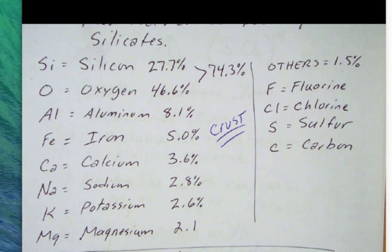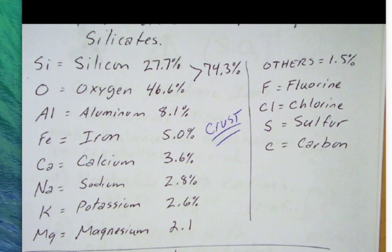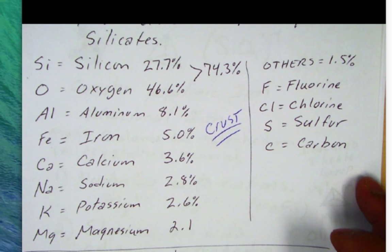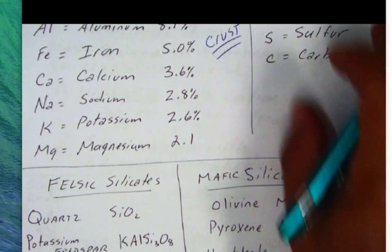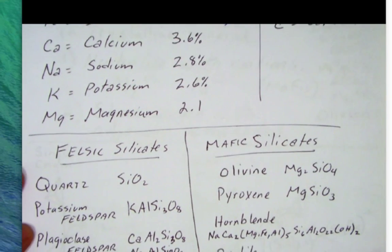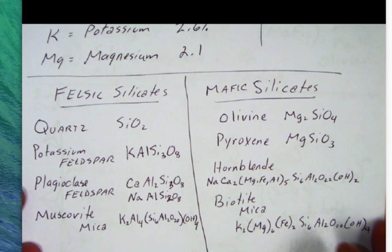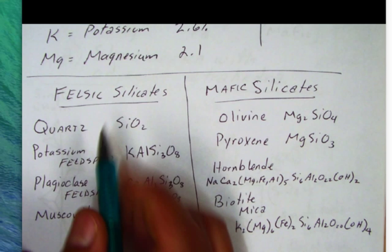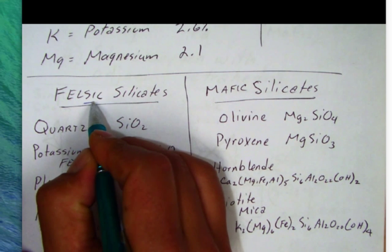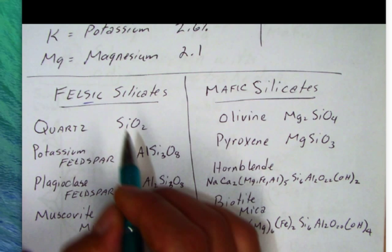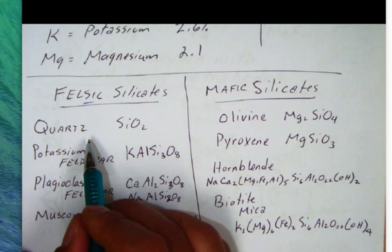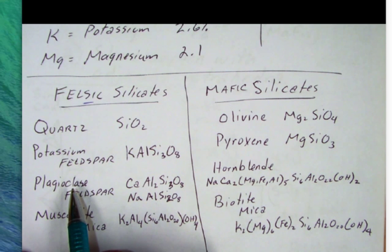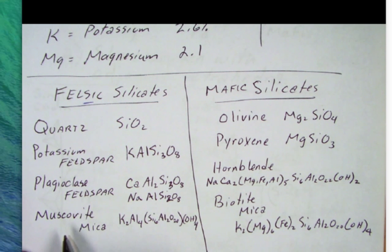I have some other numbers here, concentrations for other elements, and some ones that occur mostly in volcanoes. Now we're going to break down our minerals into two broad categories. The first group will be the felsic minerals, which are concentrated on silicon and oxygen. So these are going to be rich in silica. Those minerals include quartz, potassium feldspar, plagioclase feldspar, and muscovite mica.